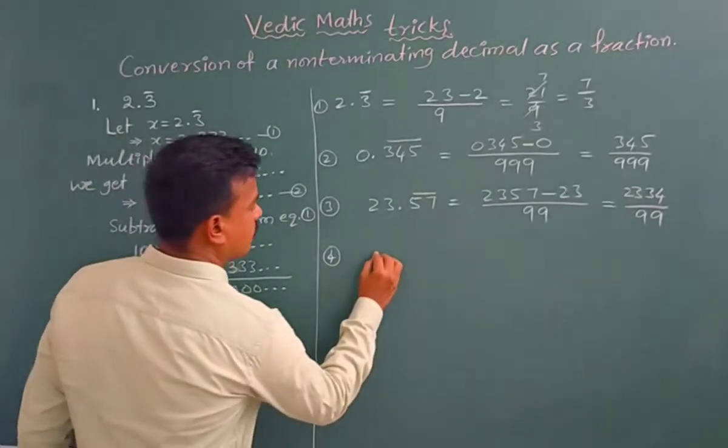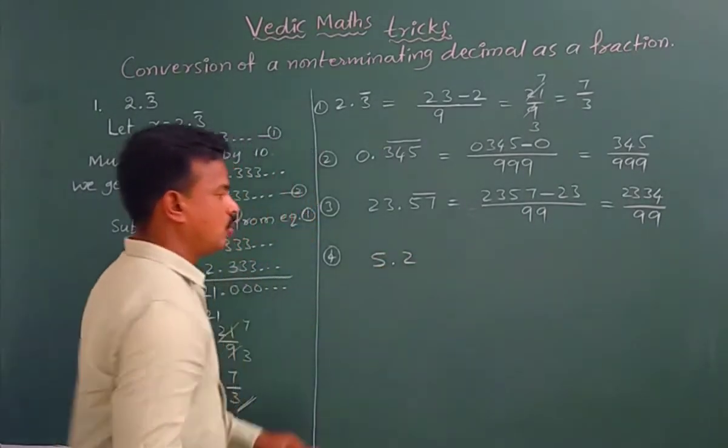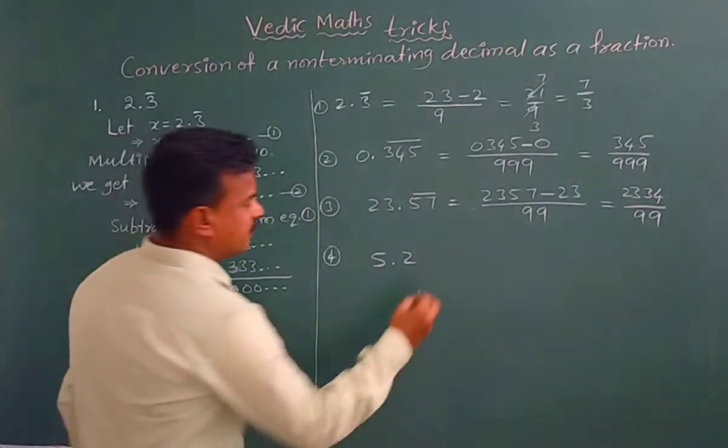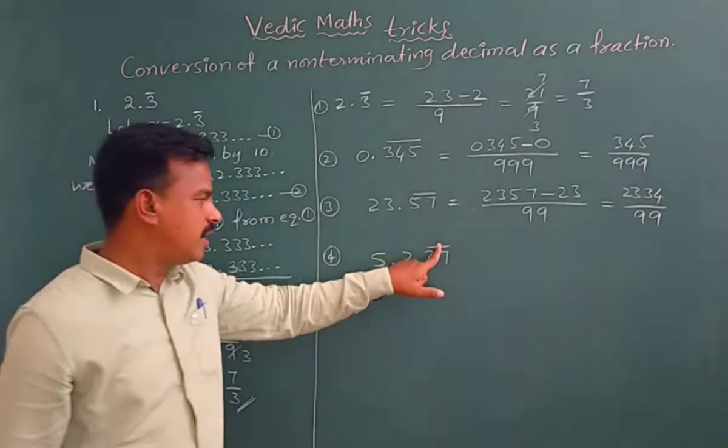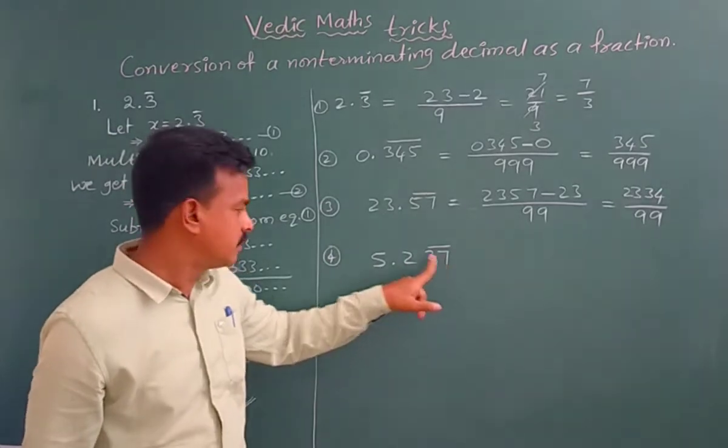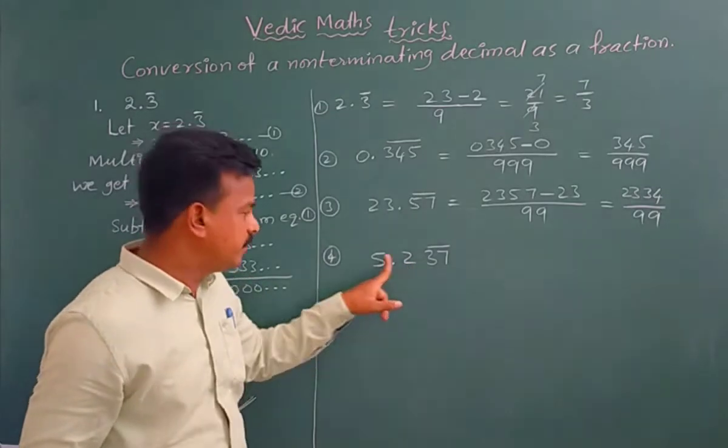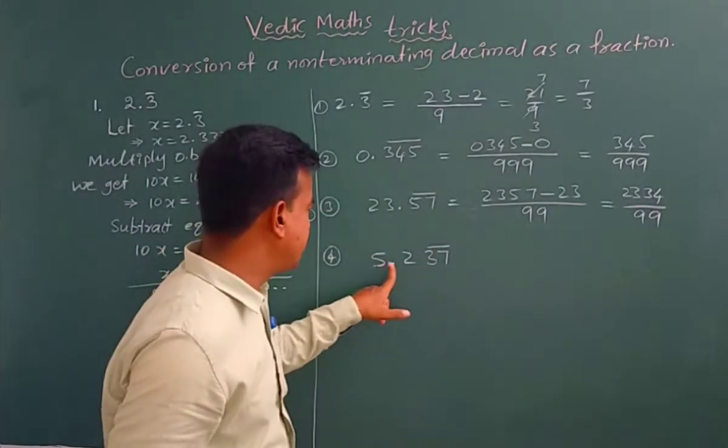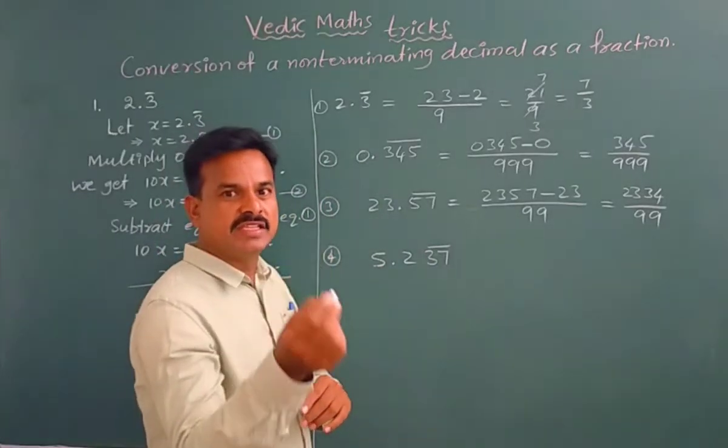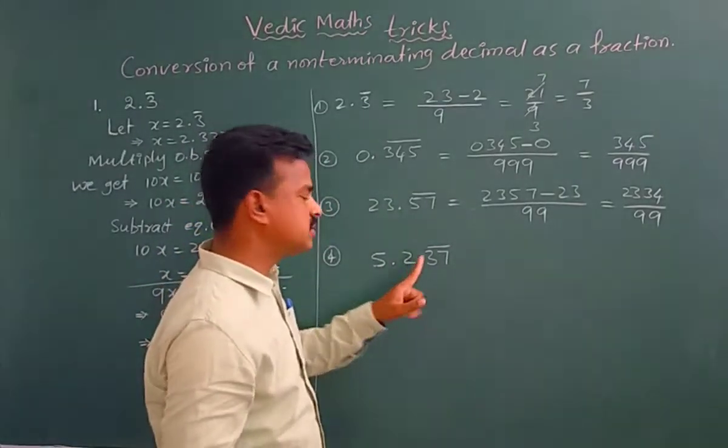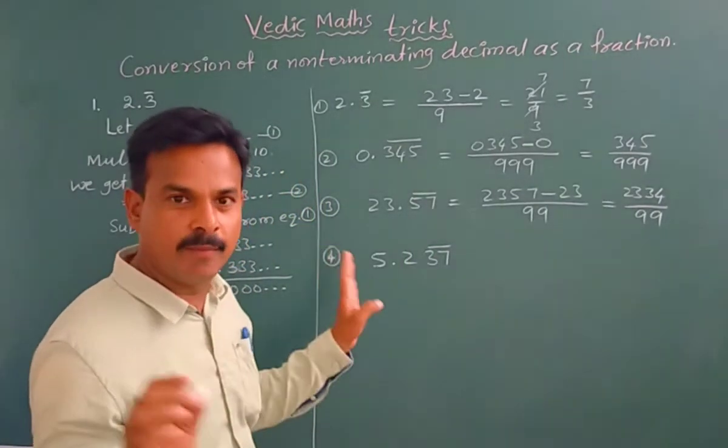Next, one more example. This is very very important. 5.237 bar, 37 bar. You see here this bar is for only 37. 5.2, 2 has no bar. That means 5.237 bar means 5.2 37 37 37. 2 is not repeating, only 37 is repeating. This is a special case, this is very important. See the video without skipping.